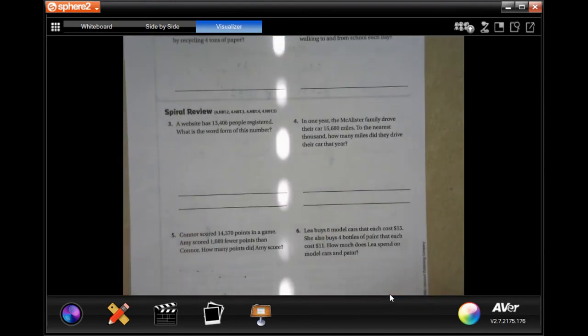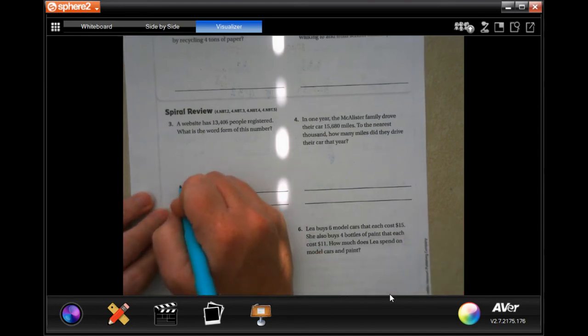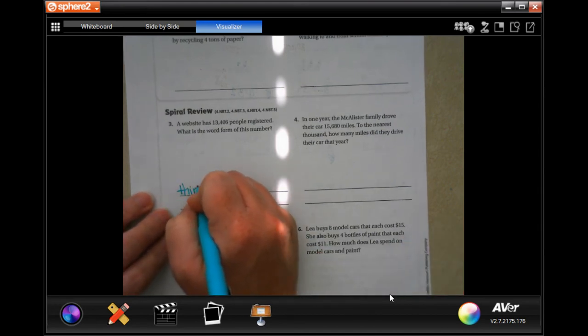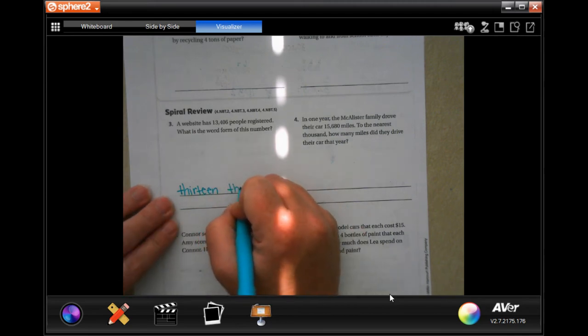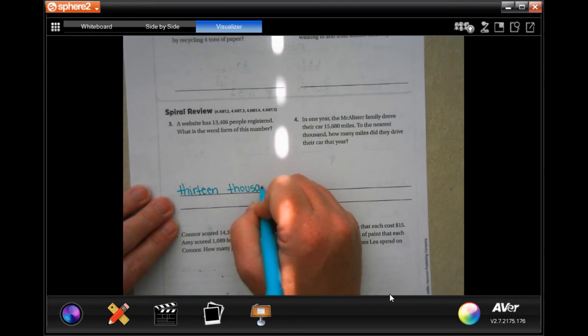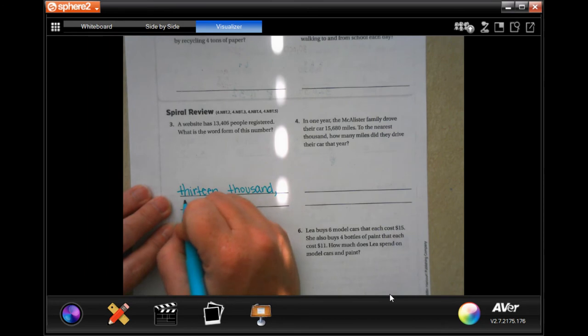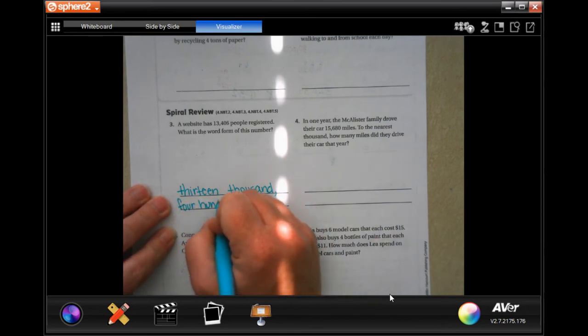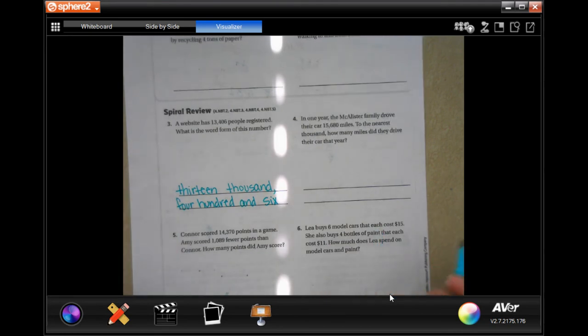A website has 13,406 people registered. What is the word form of this number? So we're going to write out 13,000, comma, wherever there's a comma here, you put a comma there, 400 and six. There you go.